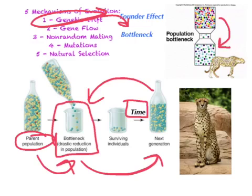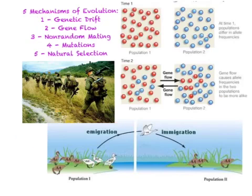Researchers think that cheetahs in Africa experienced a bottleneck 10,000 years ago, and then another one about 100 years ago. Throughout their current range, cheetahs are so genetically similar that they actually appear to be inbred. Inbreeding decreases fertility, and this factor might result in the potential extinction of this endangered species, since cheetahs have a huge difficulty reproducing now. If genetic drift occurs, the population cannot be in Hardy-Weinberg genetic equilibrium.